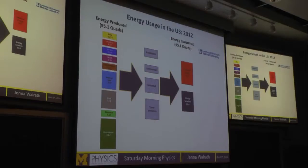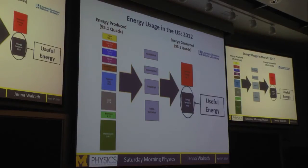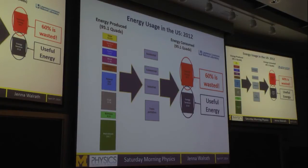This is the energy usage in the United States in 2012. On the left are all the ways we produced energy, from solar all the way down to fossil fuels — petroleum is the largest. In the middle are all the ways we used that energy: residential, commercial, industrial, and transportation. On the right is what happened to that energy after we used it. The blue box is good — this is the useful energy that did what we wanted. But 60% of all this energy is wasted, which is a really shocking number.